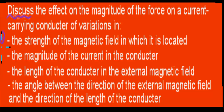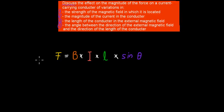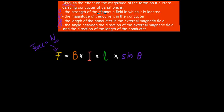So we have to look at changing these four things and seeing what it does to the amount of force being produced. These four things are represented in this formula as well. F is what we're looking for — force — and that's measured in Newtons. B is the strength of the magnetic field, and that's measured in Teslas.